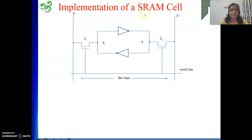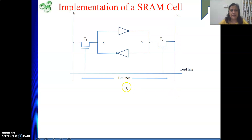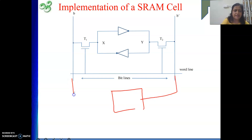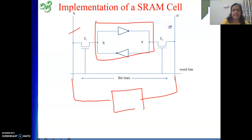In case of SRAM, one single cell is nothing but a latch. The latch is implemented using two cross-connected inverters. The cross-connected inverters are the basic storage element, capable of storing one bit of information — either one or zero. This storage element is connected to the bit lines B and B bar, which are ultimately connected to the sense/write circuit.